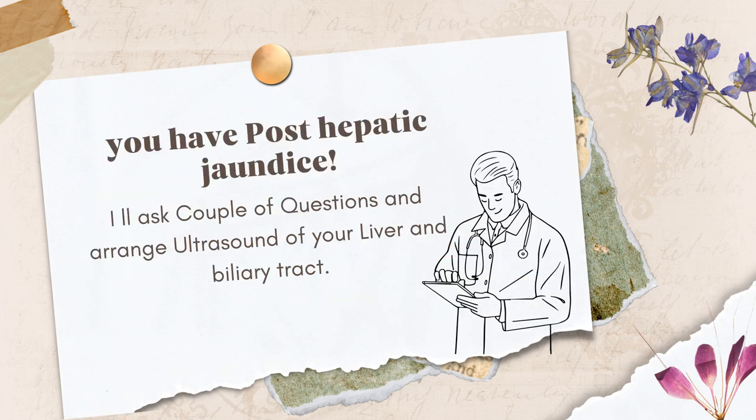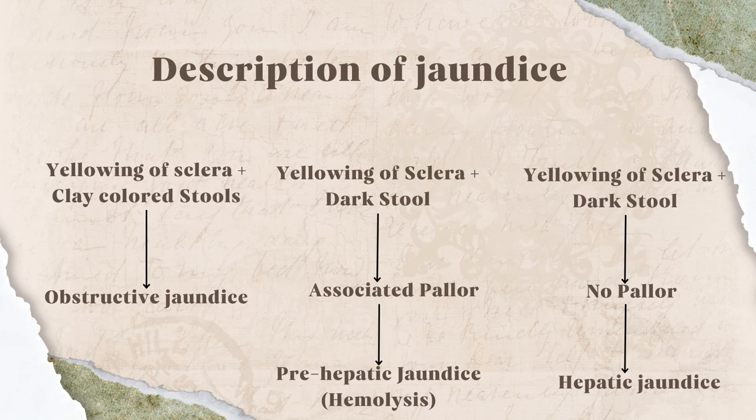Our patient replied: 'Yes, my urine color is golden yellow and surprisingly my bowel movements are pale — I have never seen such a color of stool in my life.' This is the characteristic picture of obstructive or post-hepatic jaundice. With just two or three questions, you have clearly segregated post-hepatic jaundice from hepatic or pre-hepatic jaundice.